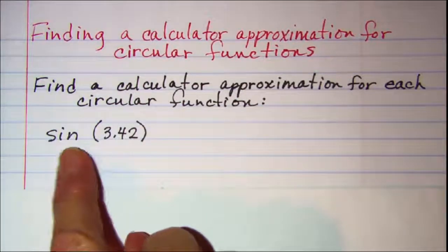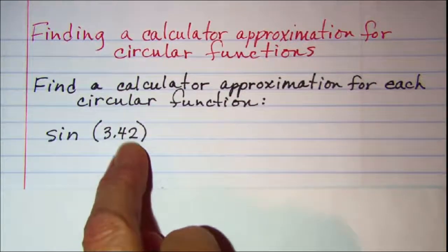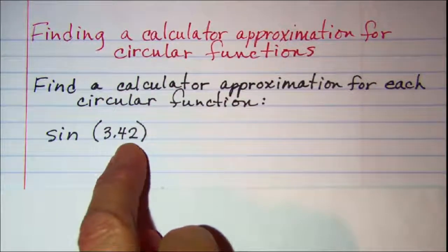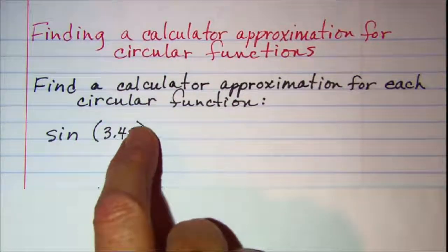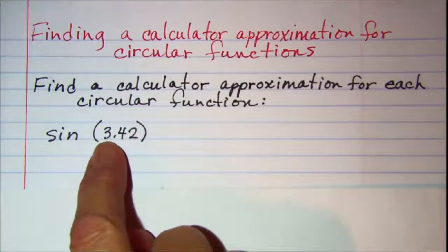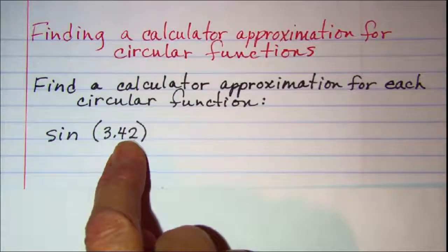Our first one is just a basic sine of 3.42. Now notice that this argument is not degrees because if you wish degrees you need to put the degree symbol. So when we see just the 3.42 we know that we're dealing with radians.